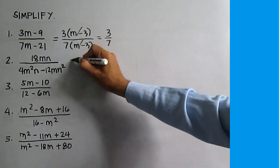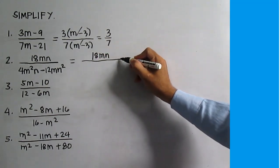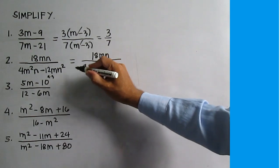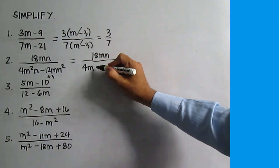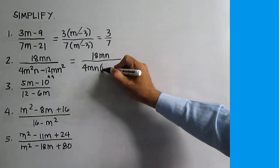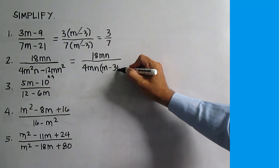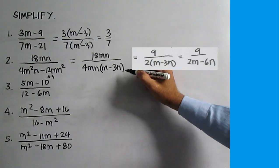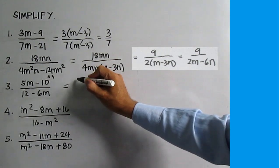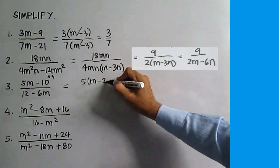Number 2 is equal to 18MN, all over — the common factor is 4MN and the other factor is M minus 3N. This is just equal to 9 over 2M minus 6N.